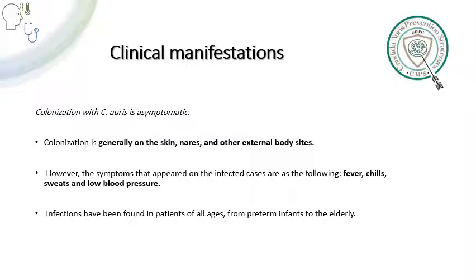For clinical manifestations, colonization with Candida Auris is asymptomatic, and colonization is generally on the skin, nares, and other external body sites. However, symptoms that appear in infected cases include fever, chills, sweats, and possibly low blood pressure. Infections have been found in patients of all ages, from preterm infants to the elderly.